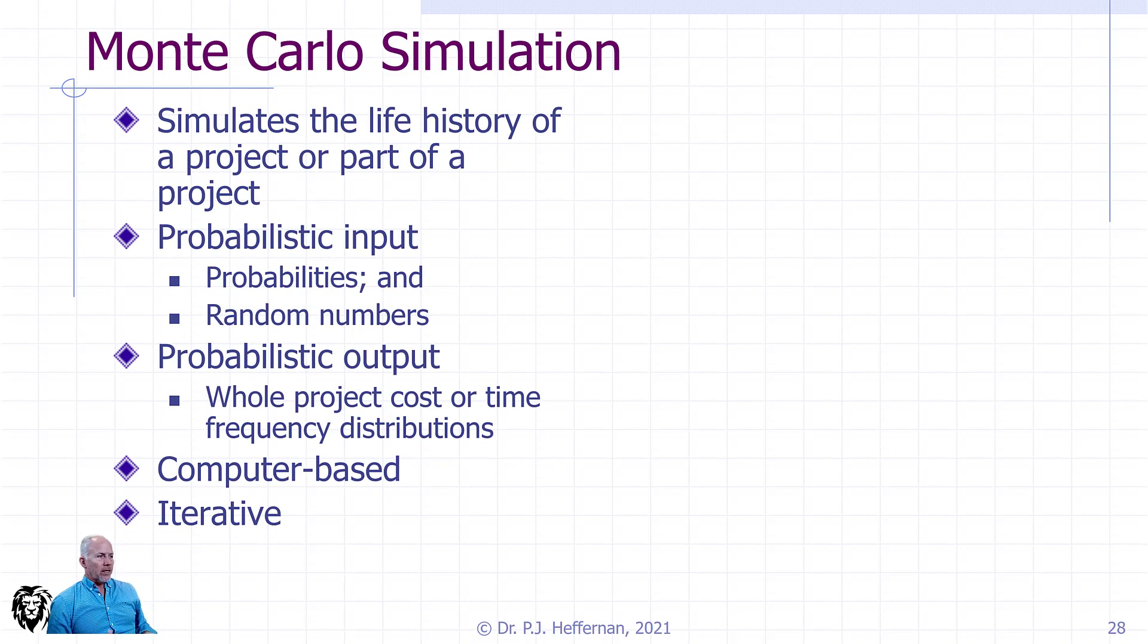So how does Monte Carlo simulation work? It basically simulates the life history of the project or a part of a project. Our input is probability input—what is the probability that something is going to be late? Then we have a random number generator which is going to decide where we are in that probability curve. The probabilistic output is the whole project cost or time frequency distribution. We're going to be able to aggregate this by basically brute force going through this calculation and doing it thousands of times. Obviously, this is a computer model to go through it and build up a single probability distribution for the overall project time.